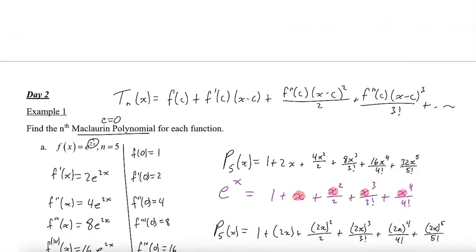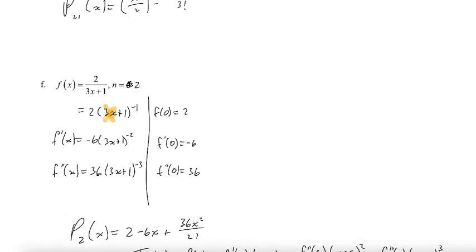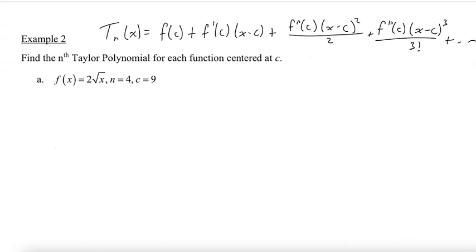Now we get into Taylor polynomials. The only difference between a Taylor and a Maclaurin polynomial is that a Maclaurin is centered at zero, while a Taylor polynomial is centered wherever they decide to center it. With this next problem I'm going to find the fourth-degree approximation using 9 as the center — this would be useful for approximating values like 10, 9.2, or 8.7.